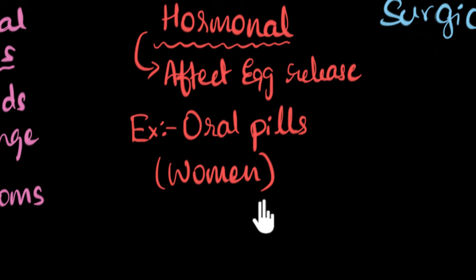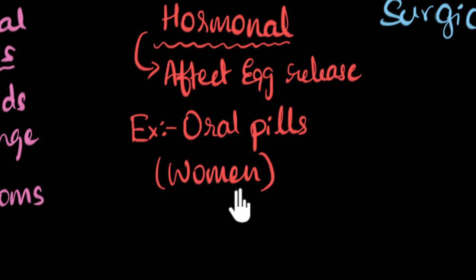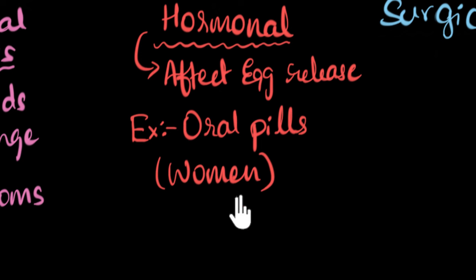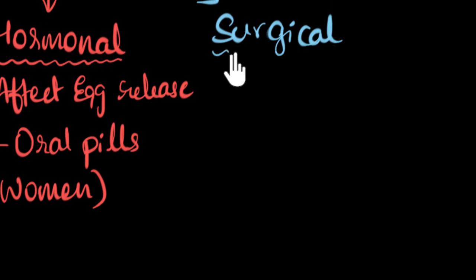Why not for men? Because in women we just have one egg to concentrate on, and that's a little easier. In men, we have millions of sperms, so it's very difficult to make all the sperms inactive. So hormonal methods are usually for women. That now brings us to the third one — the surgical method.